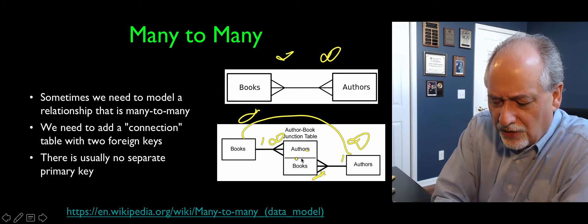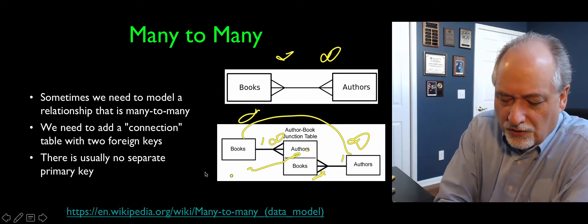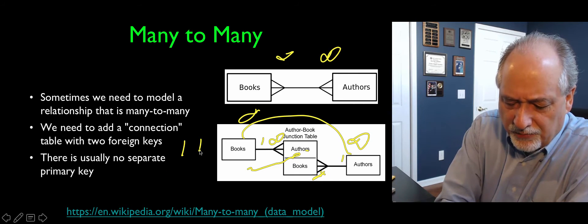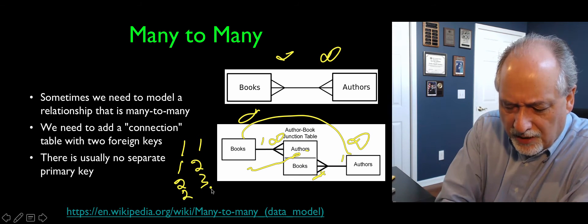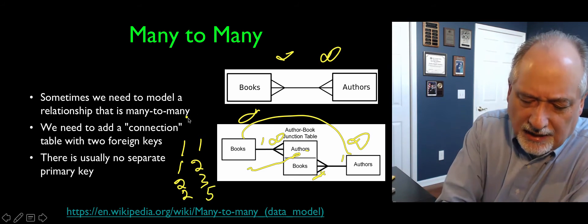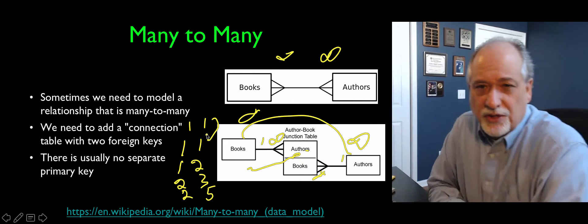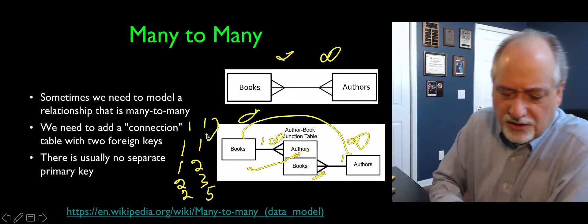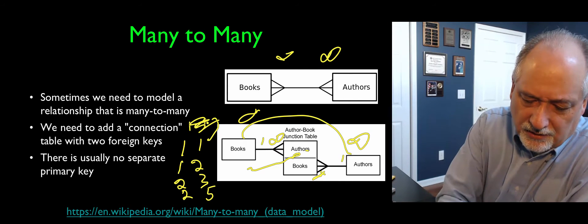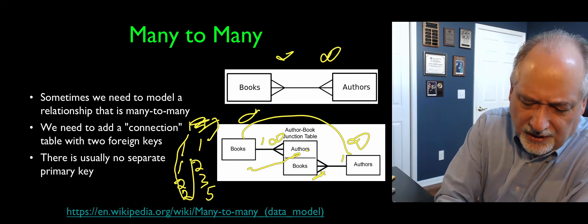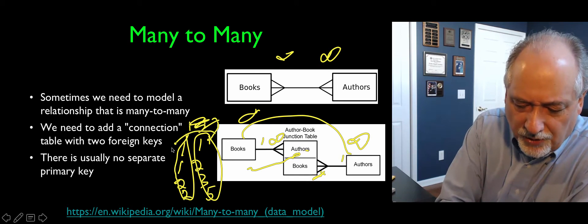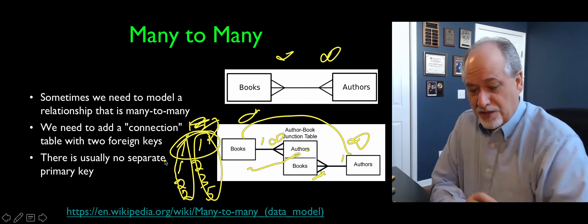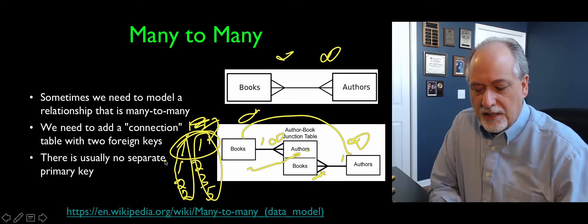We allow duplication in the individual columns but not for the combinations. Author one can be part of book one, author one can be part of book two, author two can be part of book three — but we don't allow the combination of one-one to appear more than once. We make a uniqueness constraint on these tables. The primary key is effectively the combination of those two columns — a composite primary key. We'll talk about that in a bit.